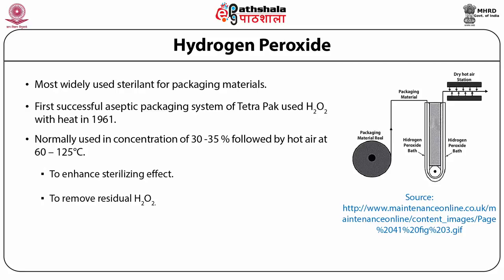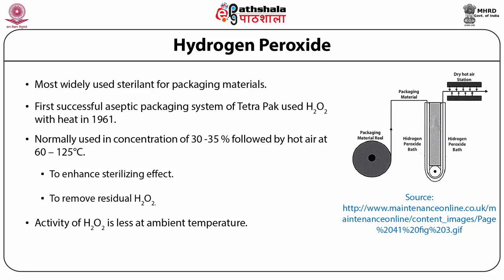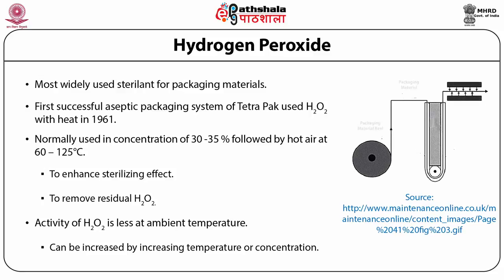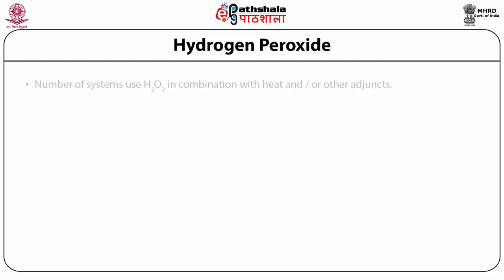Sterilizing performance increases with both temperature and peroxide concentration. At ambient environmental temperatures, the activity of hydrogen peroxide is relatively low. However, it can be increased considerably by raising the temperature to 85 to 90 degrees Celsius and/or increasing concentration. A number of systems utilize hydrogen peroxide in combination with heat and/or other adjuncts.